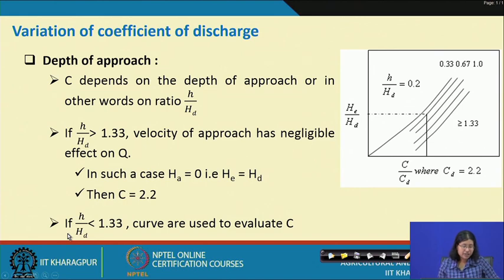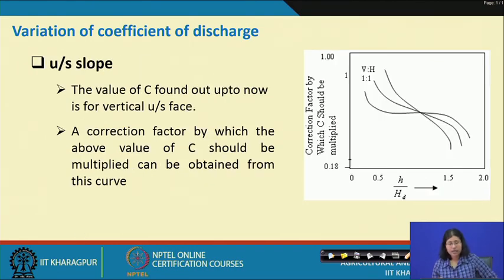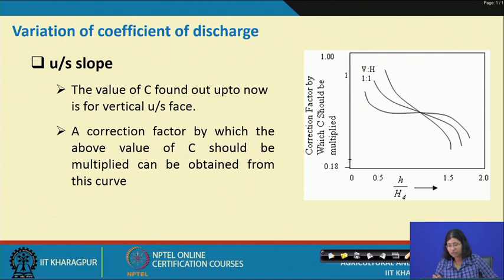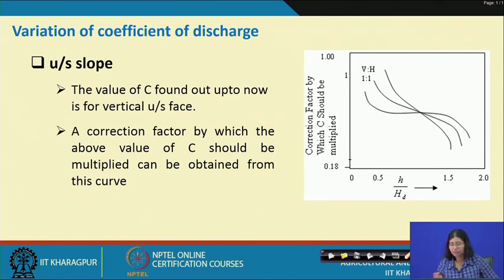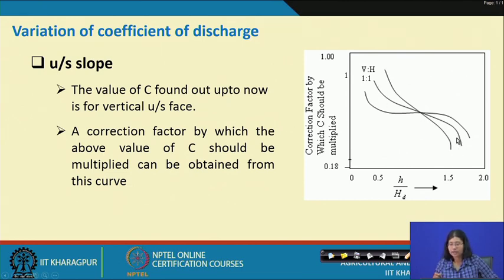However, if the H/H_d ratio is less than 1.33, a curve shown in the figure is used to evaluate the value of C. The value of C found so far is for only the vertical upstream face. In case the upstream slope V:H ratio differs from 1:1, a correction factor is applied by multiplying the above value of C accordingly, using the curve drawn where V:H = 1:1 is at the center.